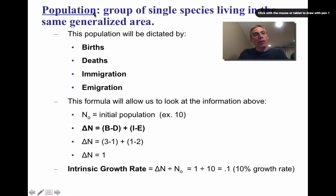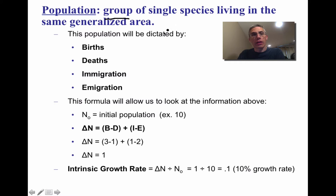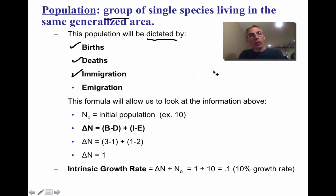Population ecology deals with populations, defined as a group of a single species living in the same generalized area. A population is determined by four things: birth rate, death rate, immigration (individuals moving into the area), and emigration (individuals moving out of the area).